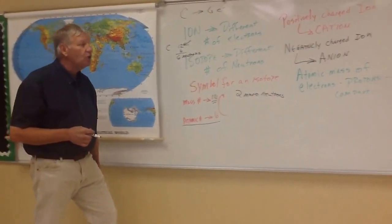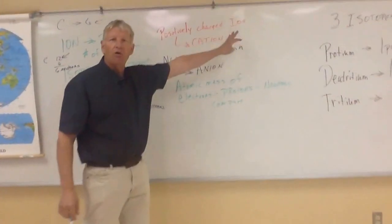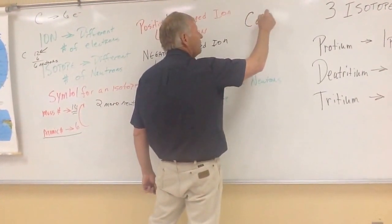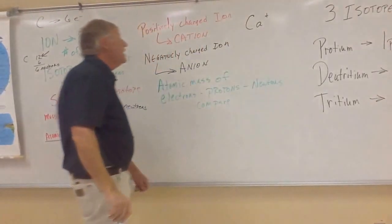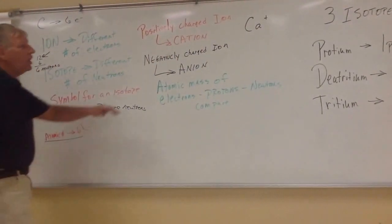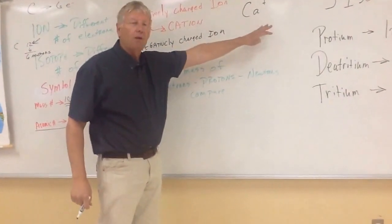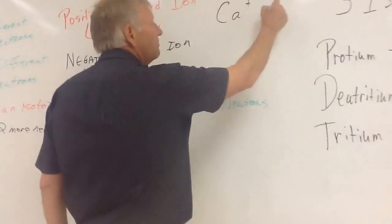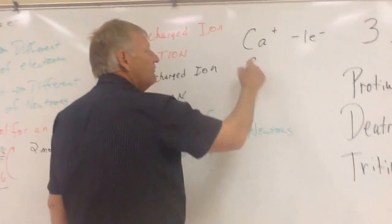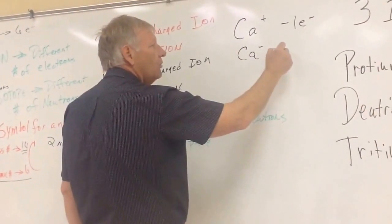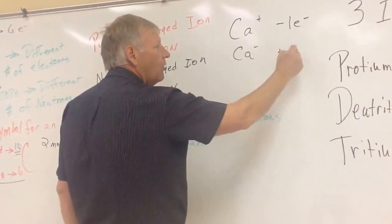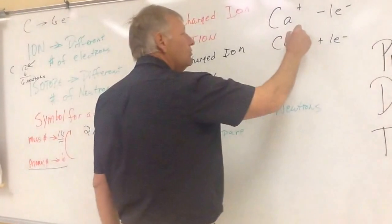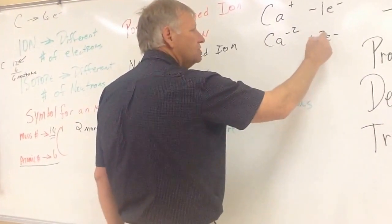If we have a positively charged ion — and an ion is a different number of electrons — let's say it's calcium with a plus sign. That plus charge means it is missing an electron, because all electrons have a negative charge. So that plus means it's minus one electron. If it was Ca-minus, then it would be plus one electron. If it was a negative two, then it would be plus two electrons.